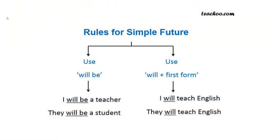Now, what are the rules for simple future tense? First, when you are using the helping verb 'be,' you can say 'I will be a teacher' — for example, I will be a teacher after two years. 'They will be a student' — when small kids are one or two years old, after they turn three they will be a student in school. When you are not using 'be,' you use 'will' plus the first form of the verb, like 'I will teach English.'